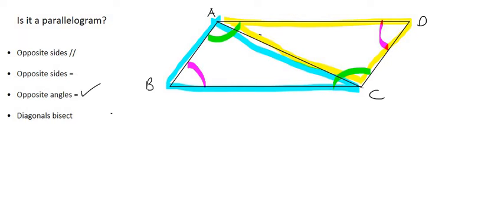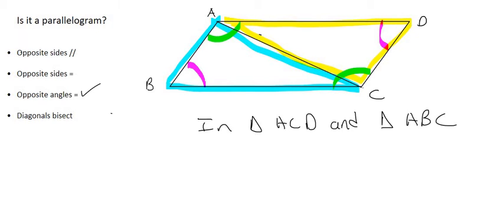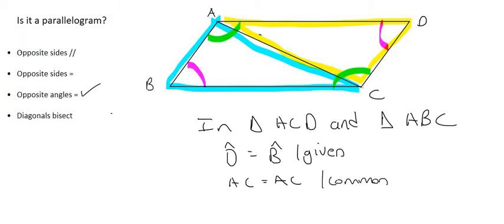We work in triangle ACD (the yellow one) and triangle ABC (the blue one). We know that angle D equals angle B because that was given. AC equals AC because it's the same side for both — the reason is common. But now if you sit back, you'd actually struggle to find a third reason. There's a mathematical trick we need to do here. Let angle A equal X; then angle C is also X. Let angle D equal Y; then angle B is also Y.